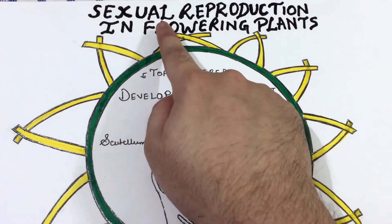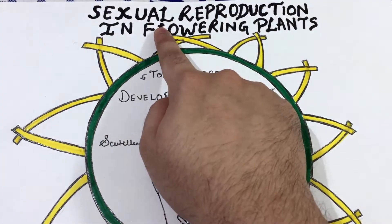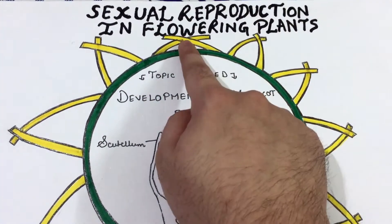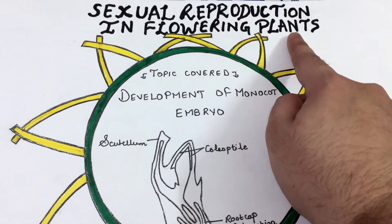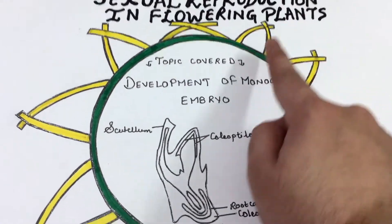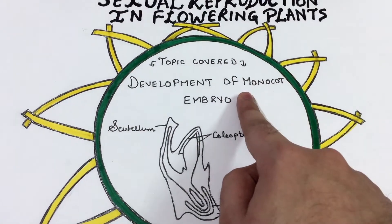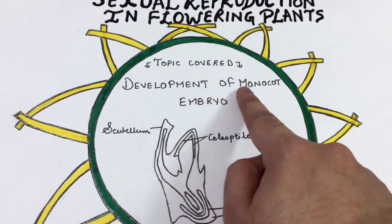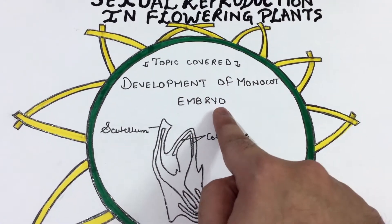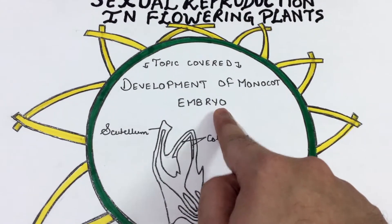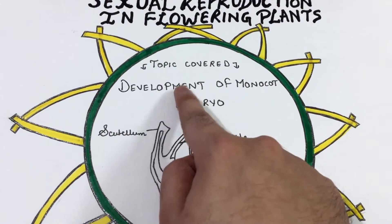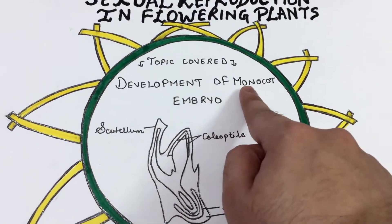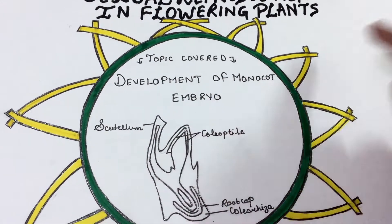Hello students, this is the 11th video of sexual reproduction in flowering plants and the topic covered in this video is development of monocot embryo, or development of embryo in monocotyledons.